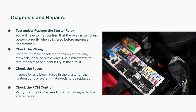Fixing code P0615 begins with diagnosing the starter relay itself. Test the relay for proper function — does it click when energized and is it passing current as expected? If not, replace the relay. Next, perform a visual inspection of the wiring and connectors in the starter circuit. Look for frayed wires, signs of corrosion, or burnt connectors. Use a multimeter to check for continuity and voltage between the ignition switch, PCM, and relay.